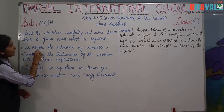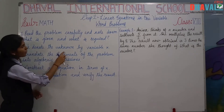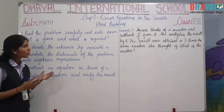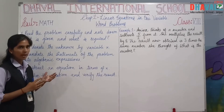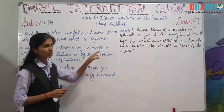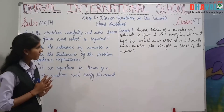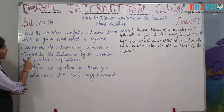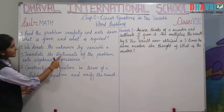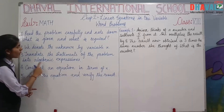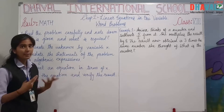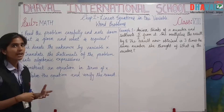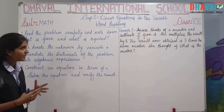Second point: we need to denote the unknown by variable x. Third one: translate the statements of the problem into algebraic expressions. Algebraic expressions are, for example, x plus 3 is equal to 15, and 2x upon 3 is equal to 18.